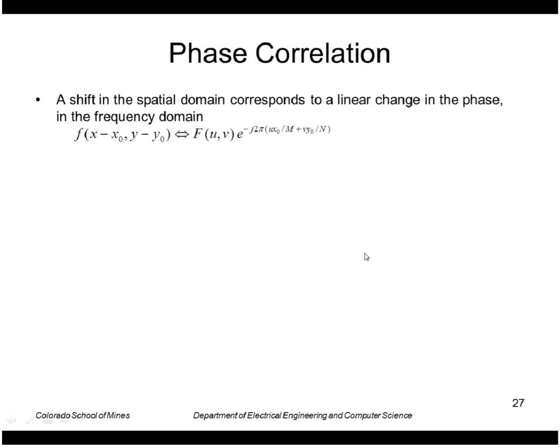We're going to use the translation property of the Fourier transform. Recall that a translation in the spatial domain results in a phase change in the frequency domain by this amount here. Assume that we have two images, one is shifted with respect to the other by x0, y0. That means the new transform is equal to the old transform but where every point u,v is multiplied by this exponential here.